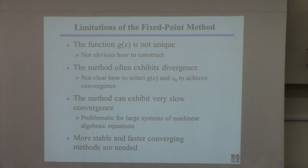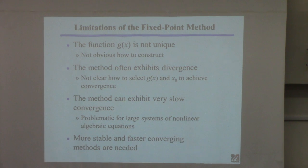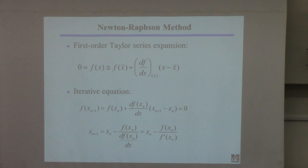So what we need is something more stable — meaning things that don't diverge as easily — and also faster, so it converges to the right answer more reliably and more quickly. The most common technique used in all of numerical methods is called the Newton-Raphson method.